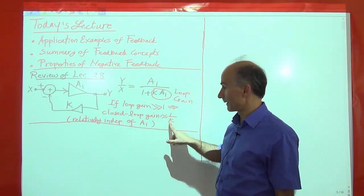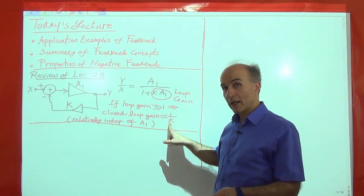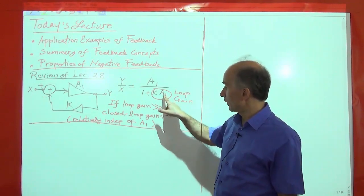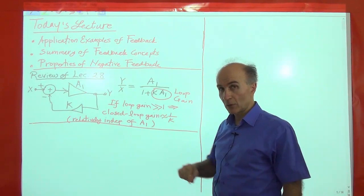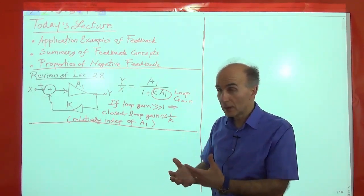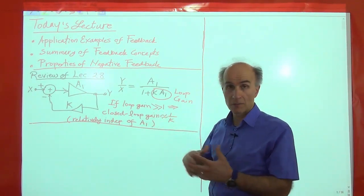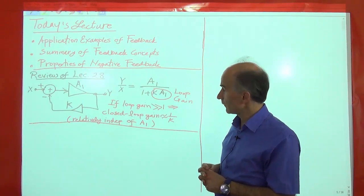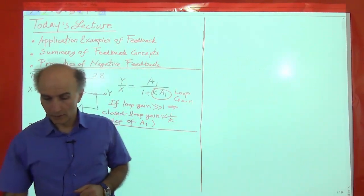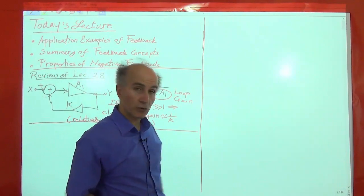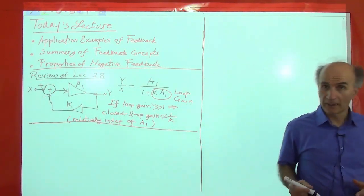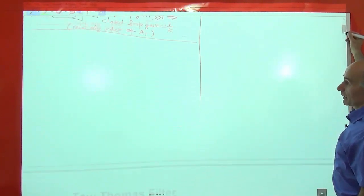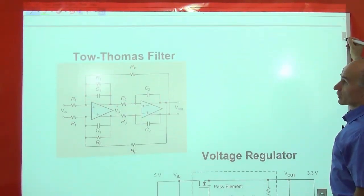This cancels, and we have 1 over k. The key point here is that now the closed-loop gain has only a weak dependence on A1, because we really don't see A1 here. We saw that if A1 changes by a factor of 2, the closed-loop gain changes by a much lesser extent, and that's the beauty of negative feedback. Now before we go further into these concepts, I just wanted to show you some examples of what negative feedback can do for us. It's been useful for many decades, so here are some quick examples. You don't have to write these down, just so that you have an idea.